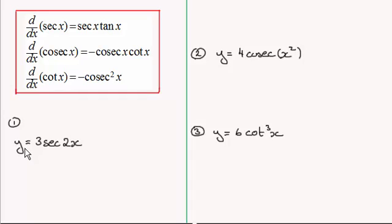And I've got three examples which should show off different ideas. We've got in the first one y equals 3 sec 2x, second one y equals 4 cosec of x squared, and in the third one y equals 6 cot cubed x.